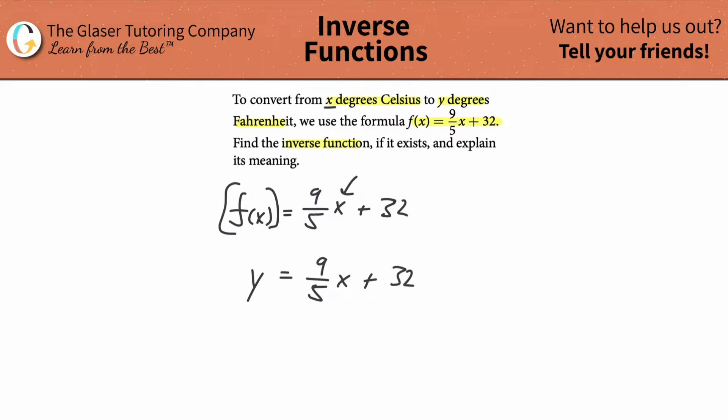Now they mentioned that x represented Celsius degrees and y represented Fahrenheit. So instead of using y and x, what I'm going to do is substitute in the letter C and the letter F. I think once we find the inverse function, it's going to be easier to interpret. So the y value represented Fahrenheit, capital F, and the x value represented Celsius, capital C.